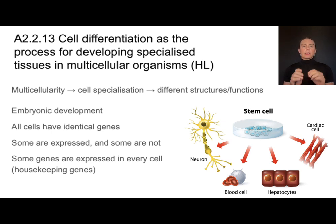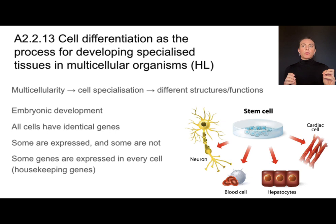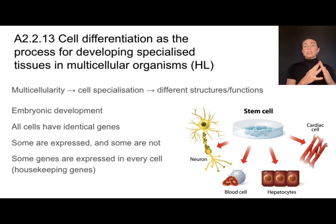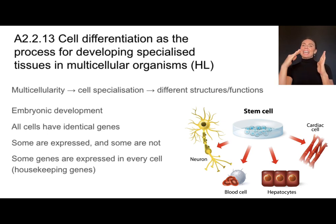The endosymbiotic theory explains how one cell became specialized and compartmentalized. Cell differentiation is a slightly different process — it's about what happens in multicellular organisms that allows them to have different types of cells. Multicellularity involves what we call cell specialization, the process by which cells develop different structures and functions. It happens during embryonic development, when all of our stem cells are undifferentiated — they're all identical and have identical genes. The way we get such a variety in different cell types is that during embryonic development, some of those genes are expressed and some are not — some genes are turned on and some are turned off.